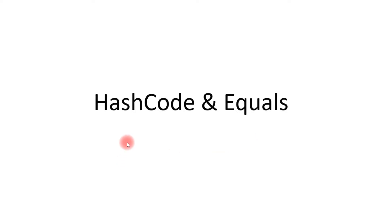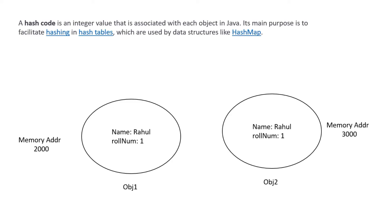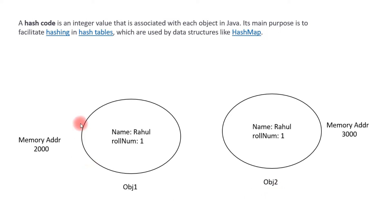Before we go and see what is hashcode and equals method, let me tell you what is hashcode in Java. A hashcode is an integer value that is associated with each object in Java. Suppose we have a student class and we are creating two objects of that class — object 1 and object 2 — a hashcode will be associated with each of them.